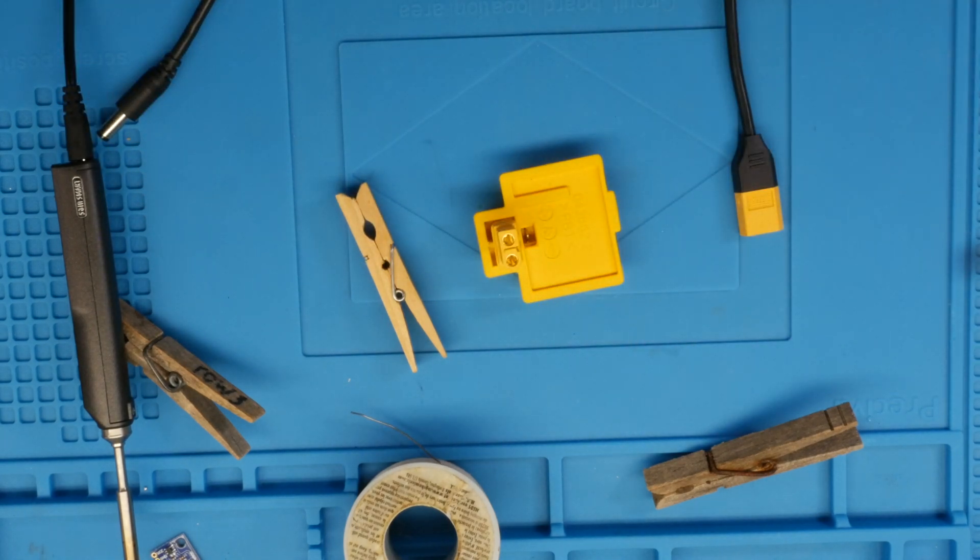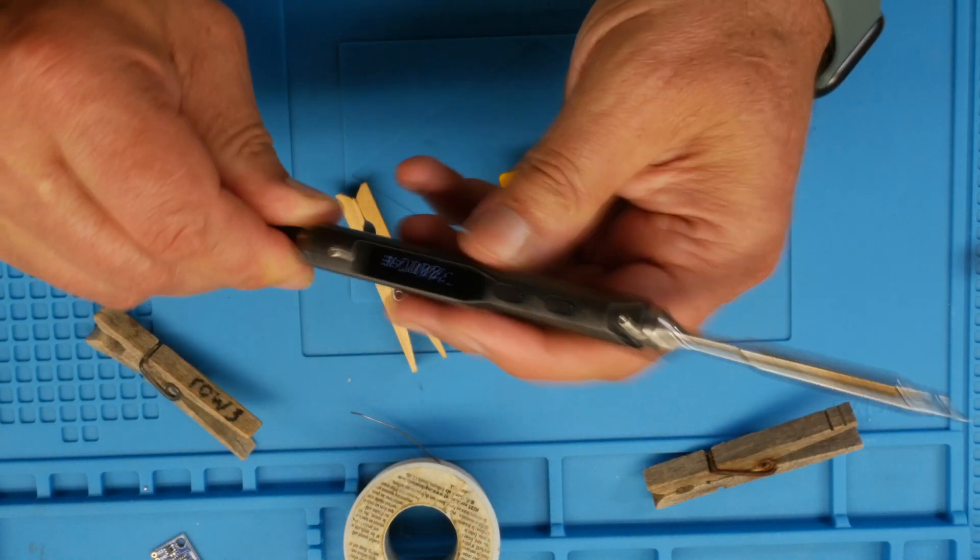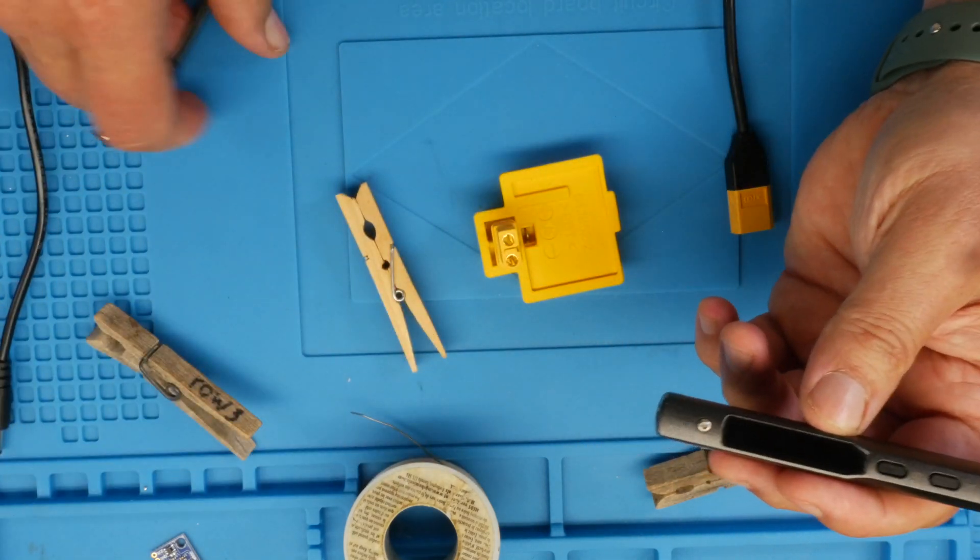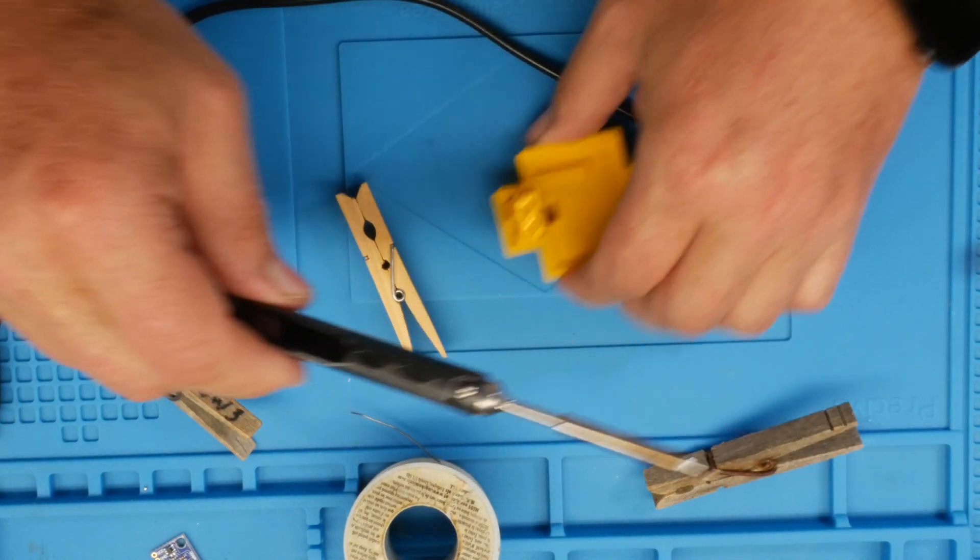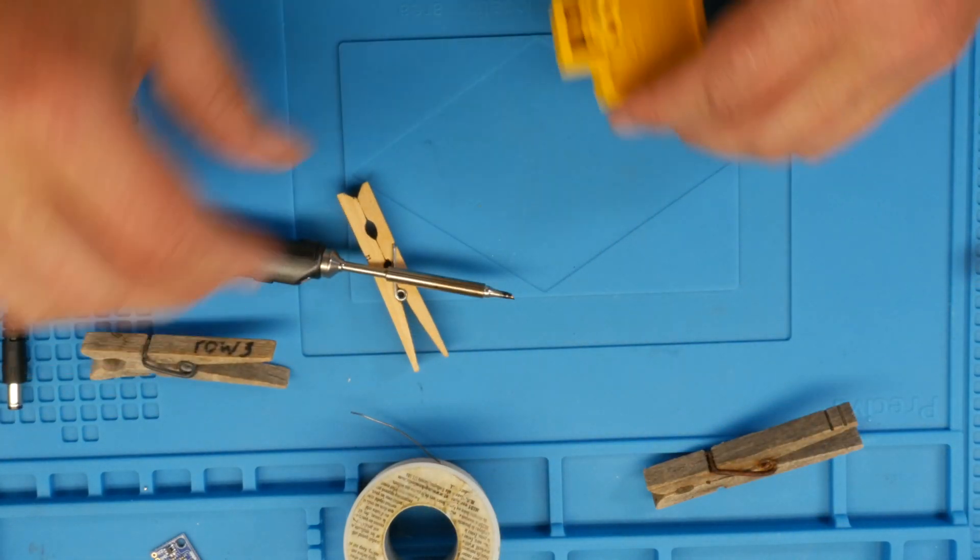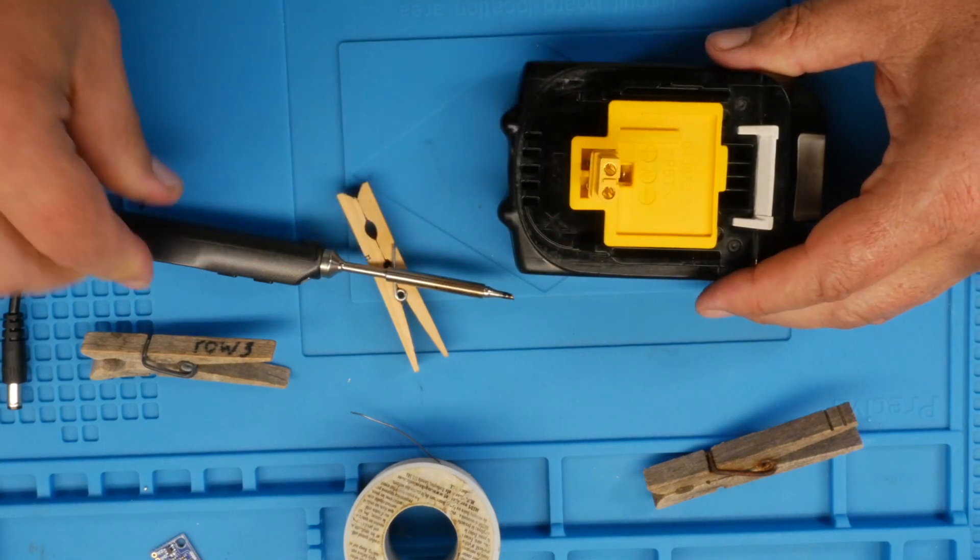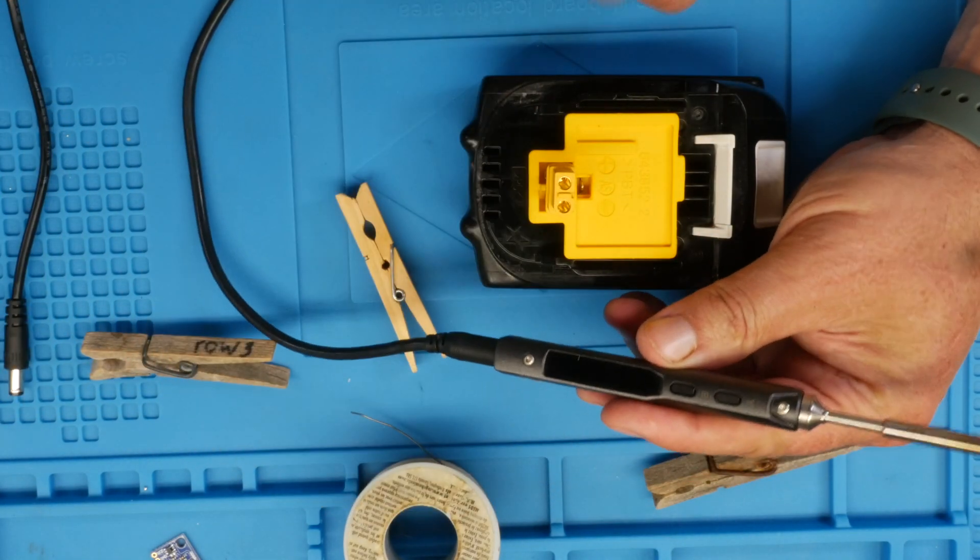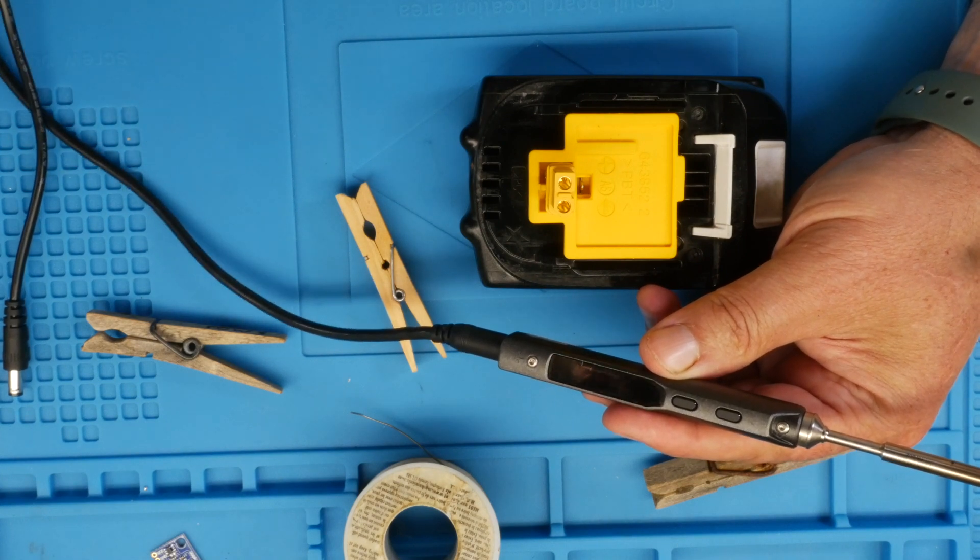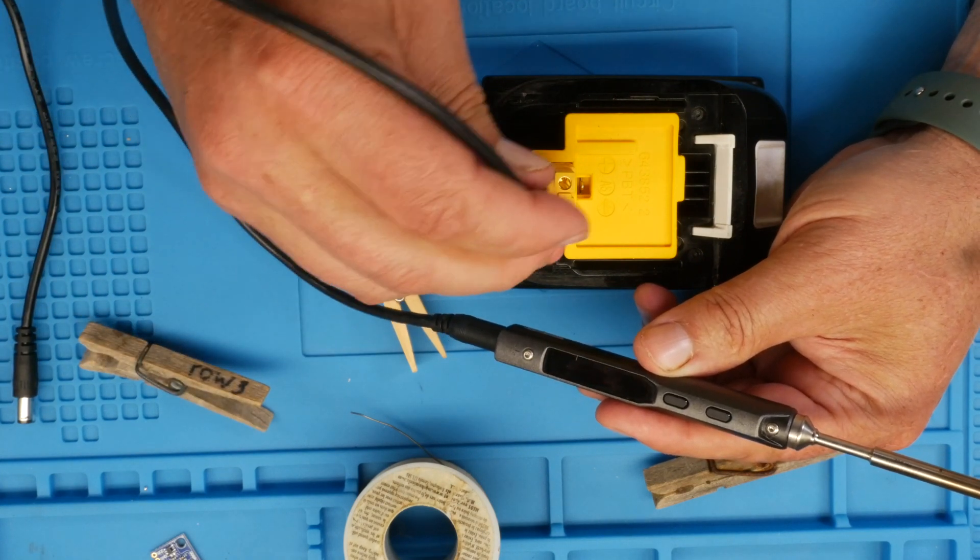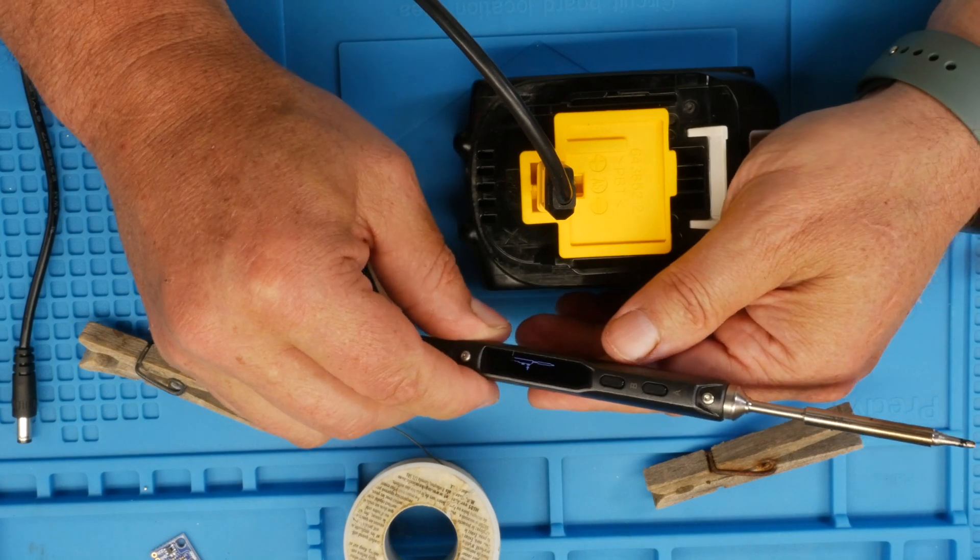Before we do anything else, let's see if this works. I'm going to unplug the iron. I'm going to take the barrel connector, plug that into the iron. I'm going to put this on the battery. I actually haven't checked if the battery is charged, but hopefully it is. Let's have a look. If we're lucky, all of this will power up. And there we go.